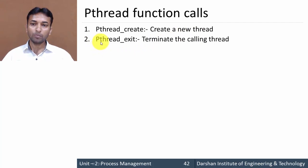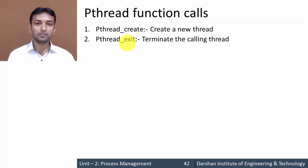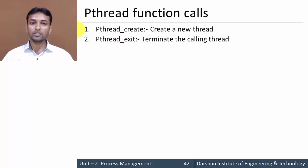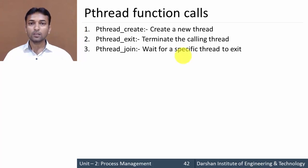The second system call is pthread_exit. This system call is used to terminate the calling thread, also referred to as the running thread. pthread_exit works the same as the kill system call in Unix.